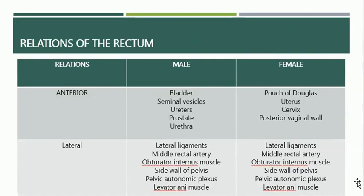As for the relations of the rectum, they must be described separately for male and female. Anteriorly in the male, the relations are the urinary bladder, seminal vesicles, ureters, prostate, and urethra. In the female, the anterior relations are the pouch of Douglas (rectouterine pouch), then the uterus, cervix, and upper part of the posterior vaginal wall.